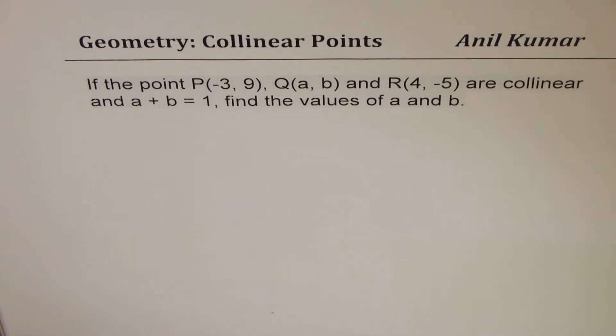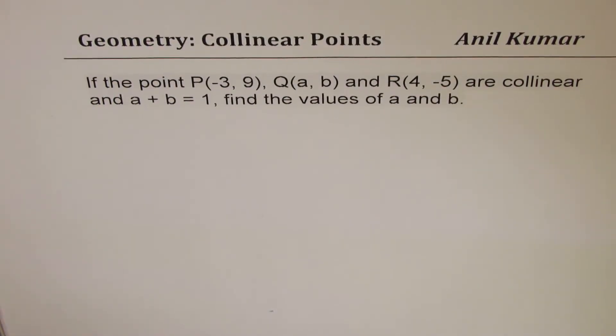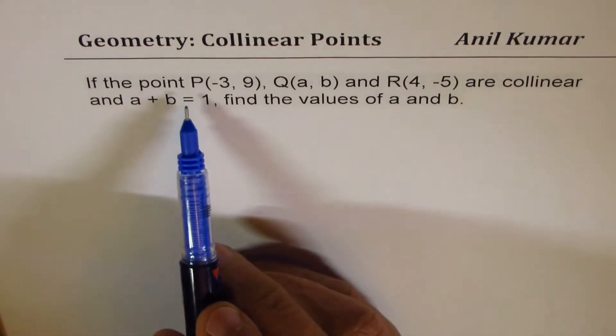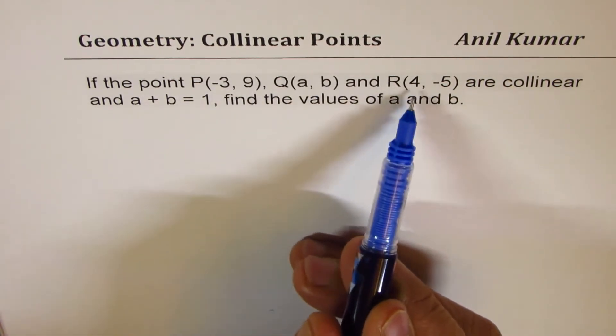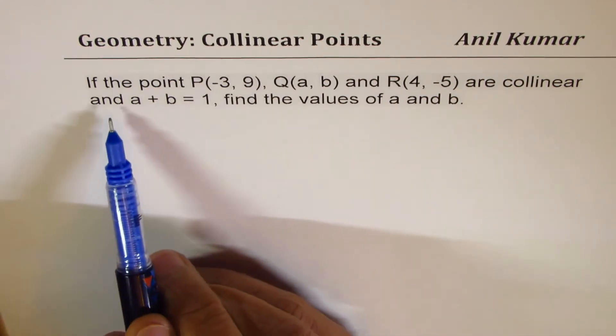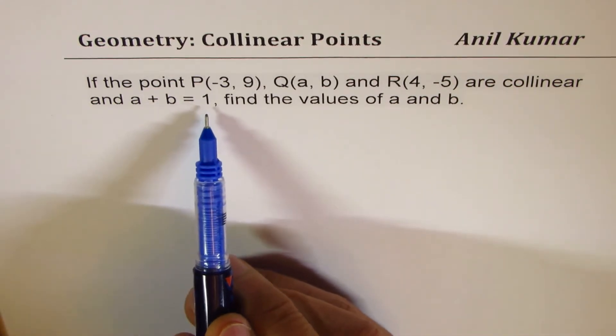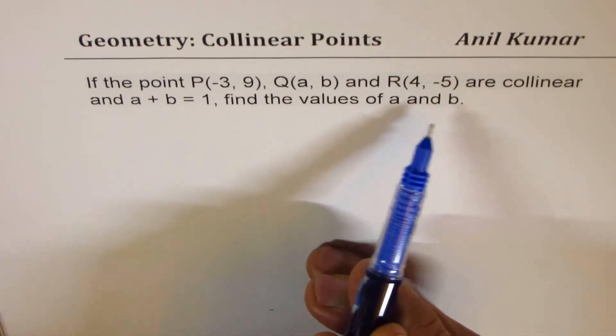I'm Anil Kumar sharing with you a test question on collinear points. The question here is if the point P(-3, 9), Q(A, B) and R(4, -5) are collinear and A plus B equals 1, find the values of A and B.